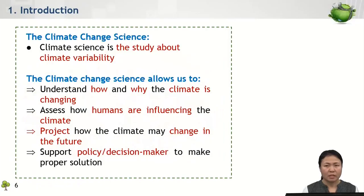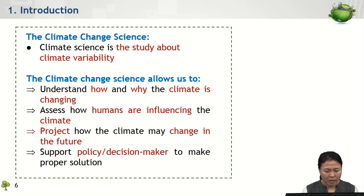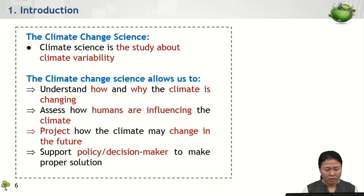So now we can discuss about climate change science. Basically, climate change science is the study of climate variability from the past, in the present, and also in the future. It is very important because it helps us to understand how and why our climate system is changing, how human activity has influenced the Earth's climate system, as well as to predict how climate conditions would be in the future — especially for decision-makers to develop policies that minimize negative impacts and promote sustainable growth.